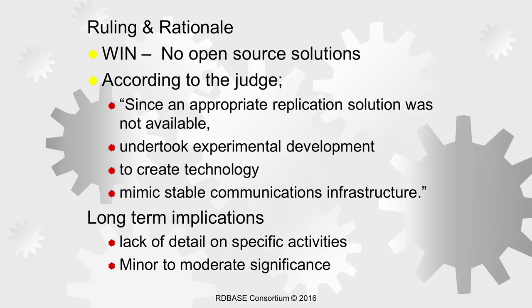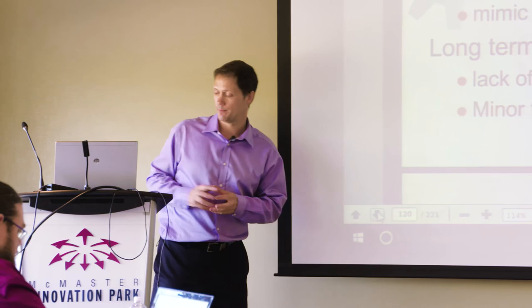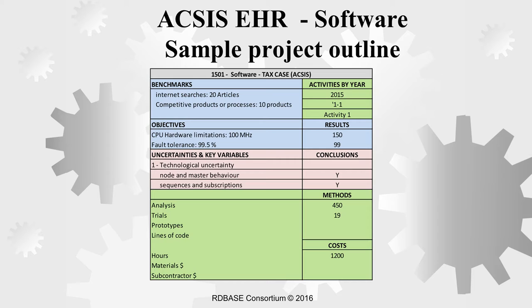They had uncertainties on CPU limitations, fault tolerance, node-to-master behavior, how to deal with sequences of subscriptions, and how changes in those assumptions would affect upstream or downstream processes. They looked at competitive products. The case doesn't get into all the details of what they did, but they ultimately win. It is of moderate significance, if you're doing software, that the courts are favorable — if you can provide a reasonable argument as to why something's in or out, the courts will generally side with the taxpayer.